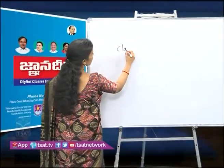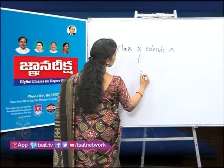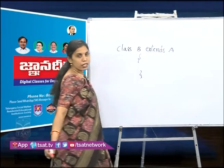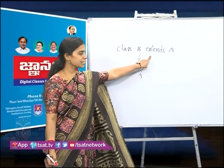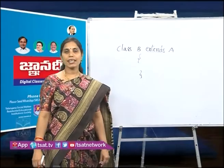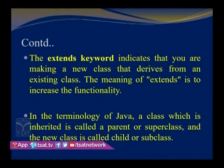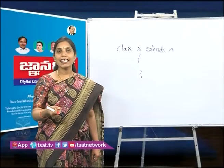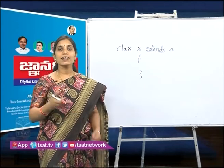Here, class B extends A. When implementing Java inheritance, we use the keyword 'extends'. The extends keyword indicates that you are making a new class that derives from an existing class — you are extending the functionality of an existing class to create a new class. In Java terminology, the class being inherited is called the superclass, and the new class being created is called the child class or subclass.